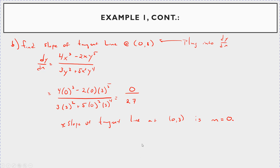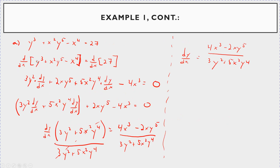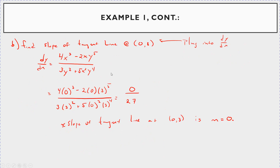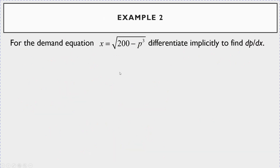Let's do another example where we mix up the variables, just so you can see it a little differently. If we have this demand function — x is the quantity demanded — it's equal to the square root of 200 minus p cubed. What I want to find is dp/dx. I'll rewrite this as (200 minus p cubed) to the 1/2 power.